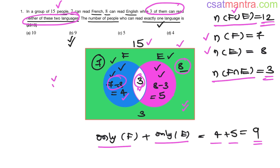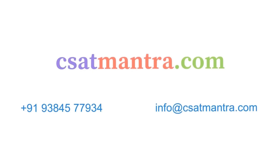We have solved these kinds of problems in our set theory lecture — kindly go through it. We have also solved problems involving 3 sets, where questions ask for the number of people who can read exactly 2 languages or exactly one language. To know more about the course, kindly visit csatmantra.com. For course or concept related queries, kindly message at our Telegram number or mail at the given email ID. Thank you.